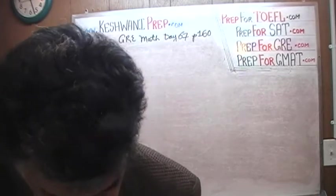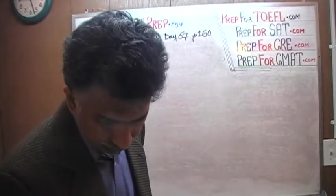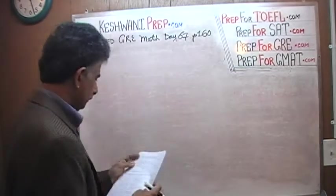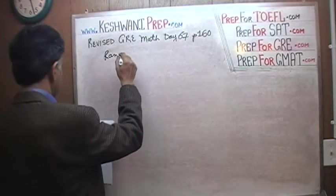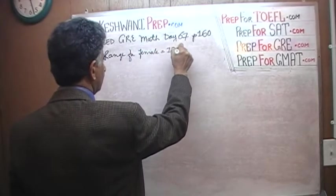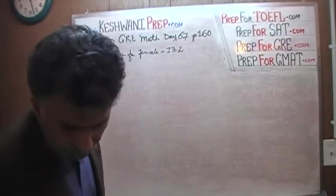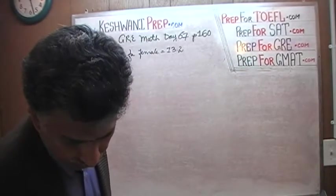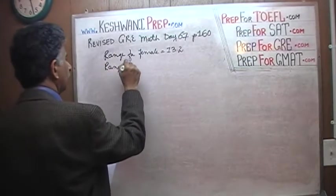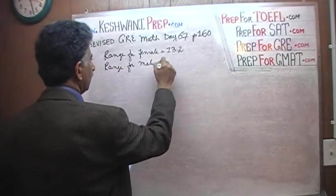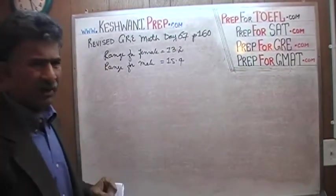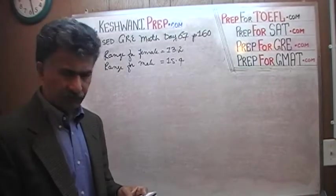It says the range of heights of female students in a certain class is 13.2. The range for female is 13.2. The range of height of male students is 15.4. Range for male is 15.4. Don't worry about the fact that I did not put down the unit. It doesn't matter whether the range is 13 inches or 13 meters or 13 yards. It is not going to do anything.